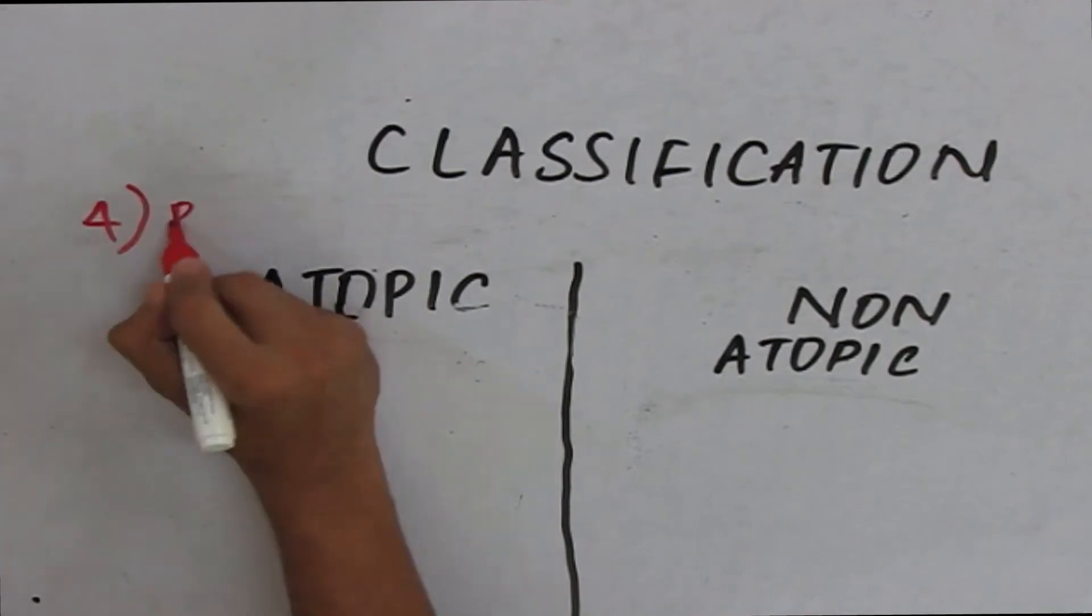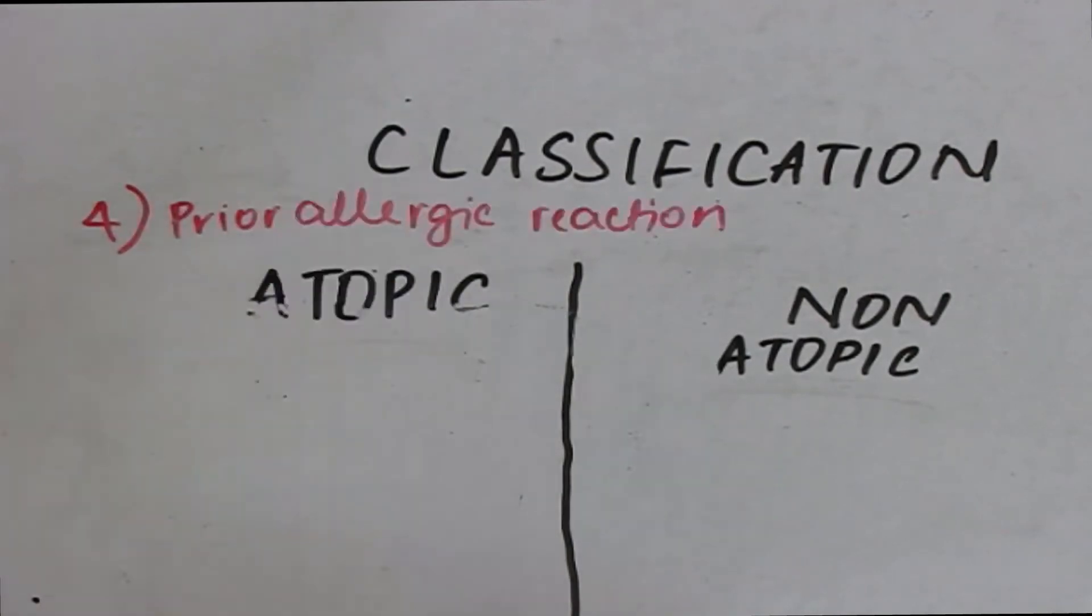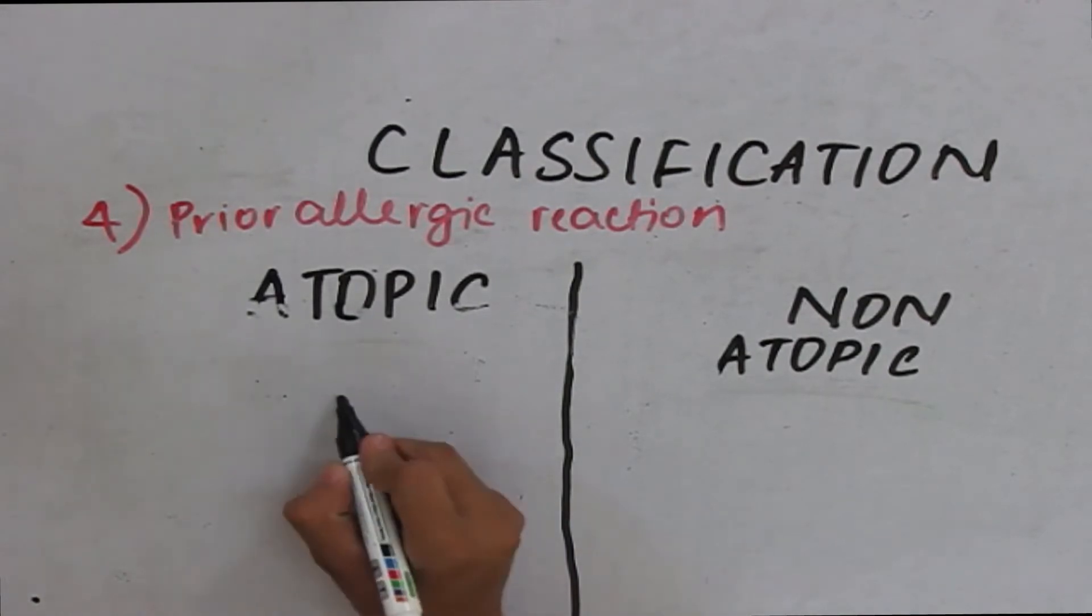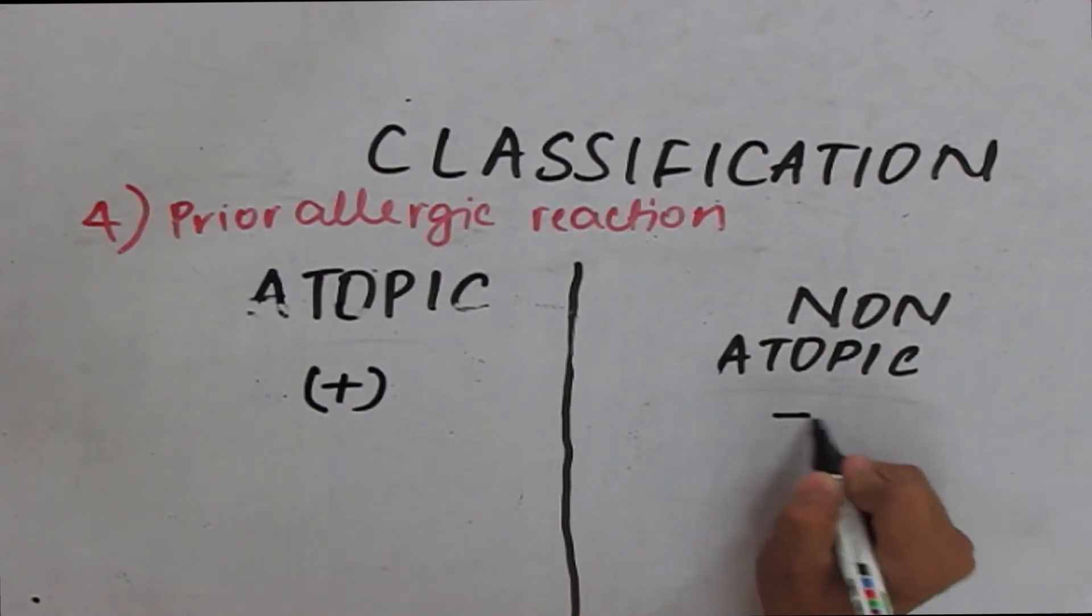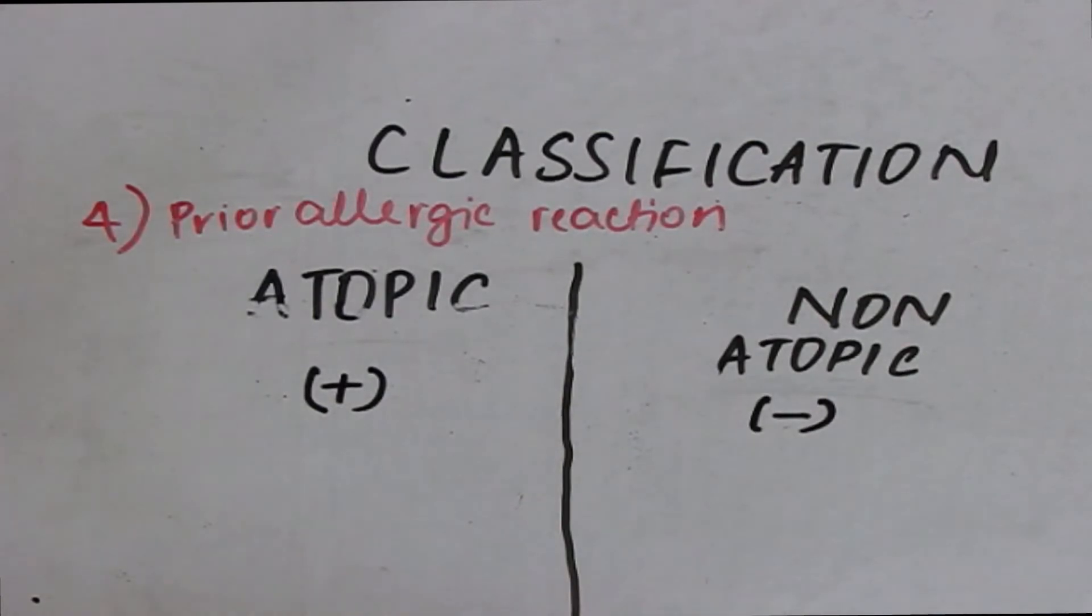The next criteria is prior allergic reaction. When a patient suffering from atopic bronchial asthma is asked for any prior allergic reaction, there is a positive history. That is, he would have suffered from a previous allergy. But in non-atopic, there is no prior allergic reaction.